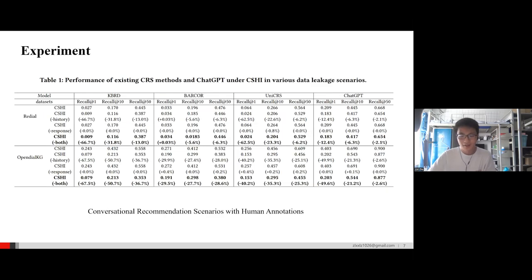We conducted the experiments in two conversational recommendation scenarios. The first scenario is built upon classic conversational recommendation datasets. These datasets typically contain human-annotated conversations with target item information. The second scenario is based on classic datasets from various fields, such as the MovieLens dataset in the movie recommendation domain.